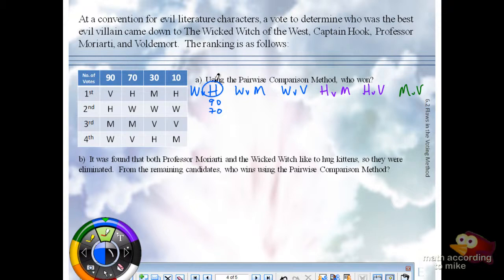Wicked Witch versus Moriarty. Moriarty gets 90. We can stop because that's over 101. It does not look good for the witch. She's too nice. Wicked Witch versus Voldemort. It's a tie. So they each get a half.